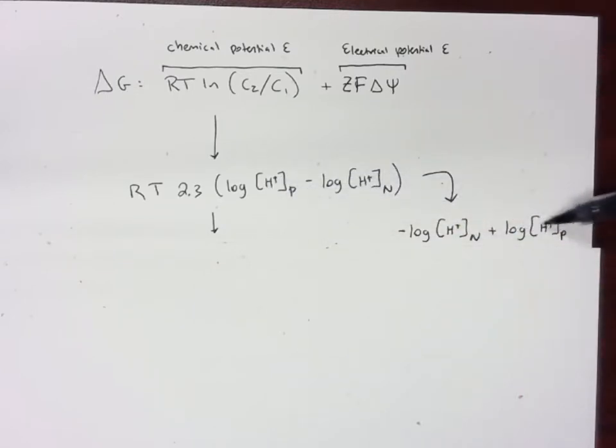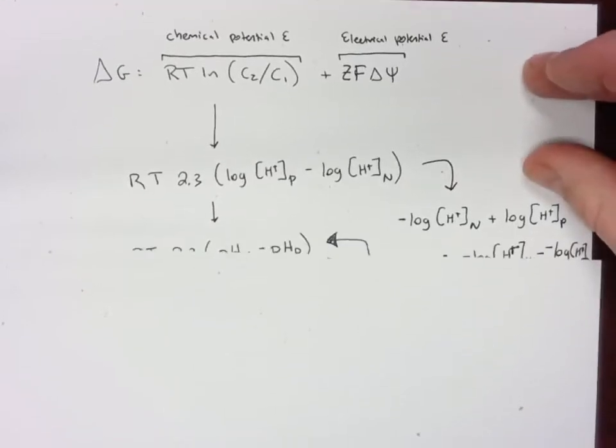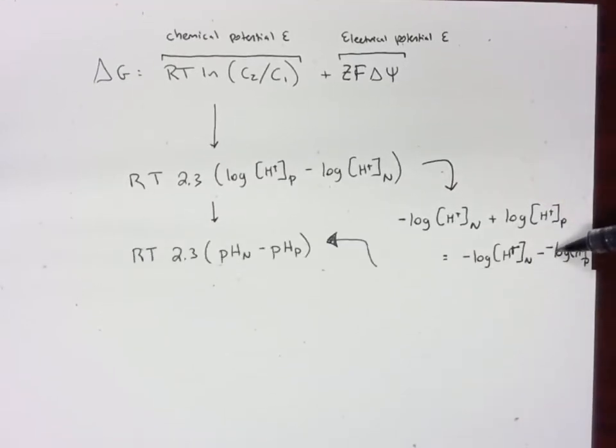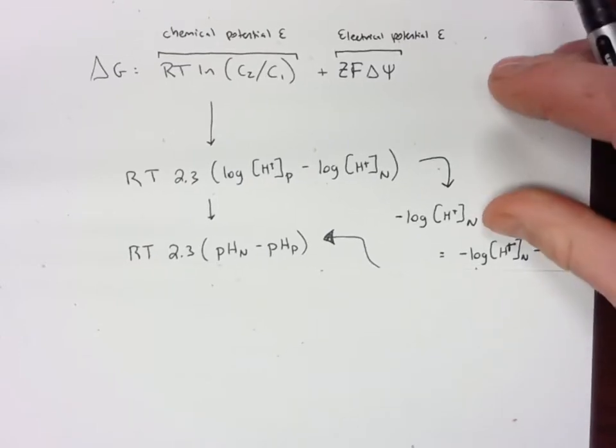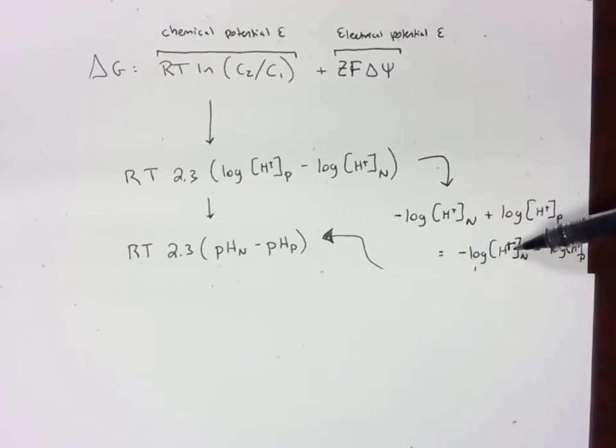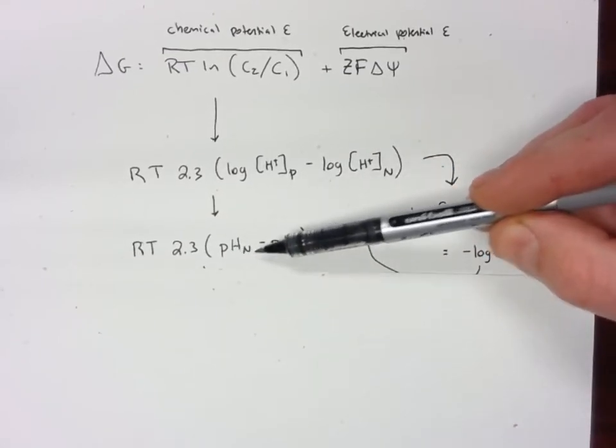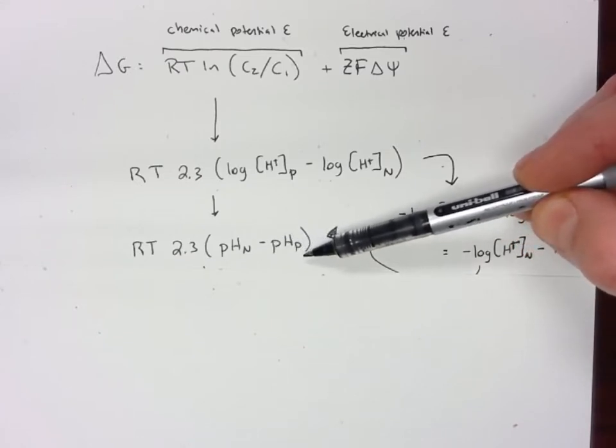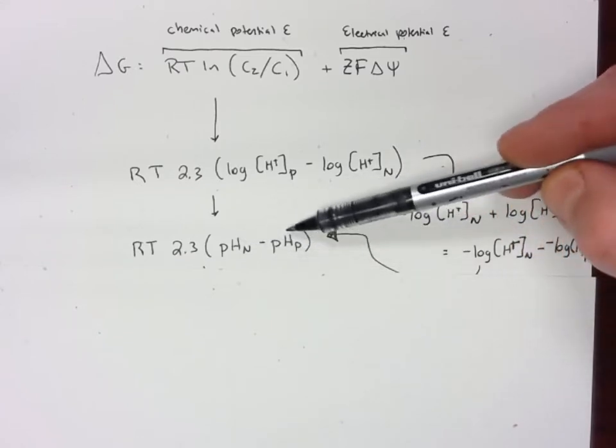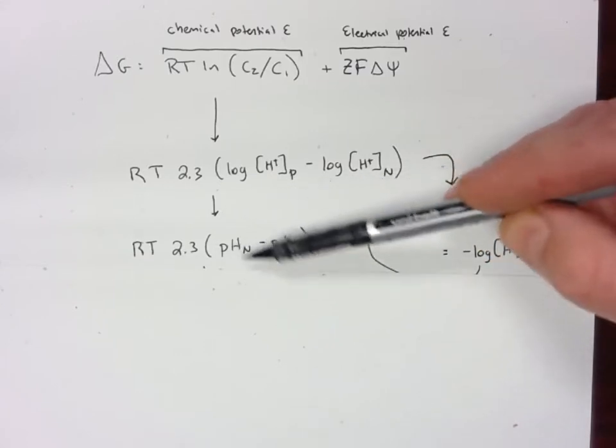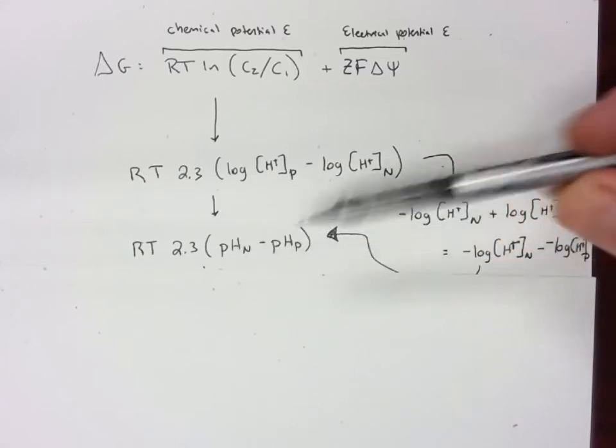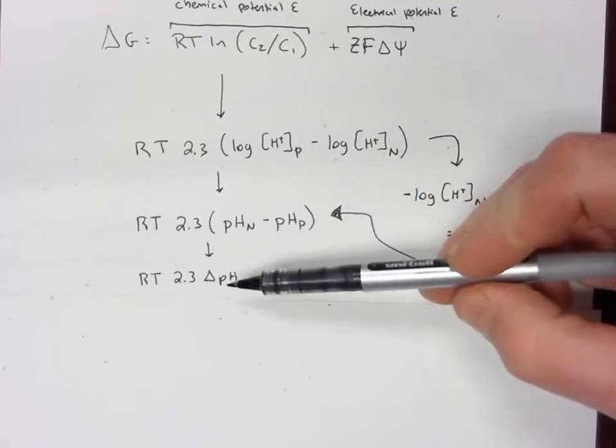Adding a positive is the same as subtracting a negative, and so we get negative log of H⁺ on the negative side minus negative log of H⁺ on the positive side, which translates into pH on the negative side minus pH on the positive side. So I have a higher pH here than we do here, so this will result in an overall positive number. Here's how that works out: RT times 2.3 times ΔpH. So we've simplified this, all that needs to be known is just the change in pH across the membrane.